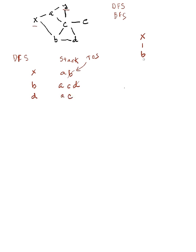So D was put on because it's a child of B, and D's child is only C, so I don't push anything to the stack. I next pop the C off the stack.